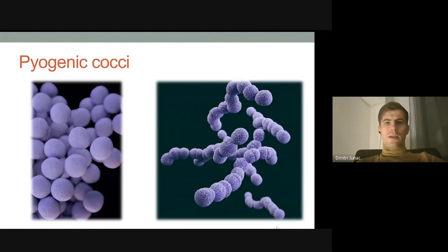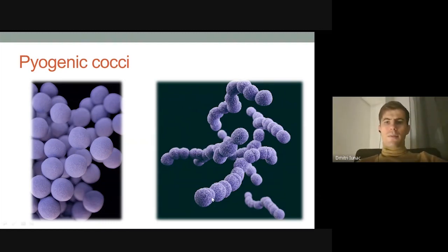Regarding their shape and arrangement, staphylococcus comes from 'staphylo' meaning grape, so staphylococcal bacteria are arranged in clusters and look like grapes because they can divide in different dimensions. Streptococcus comes from 'strepto' meaning chain, and the feature of these bacteria is to multiply and divide in just one dimension. So staphylococcus looks like a grape and streptococcus looks like a chain.